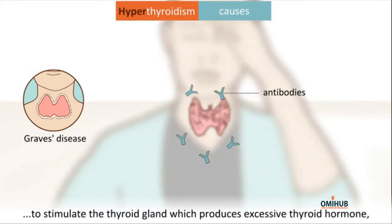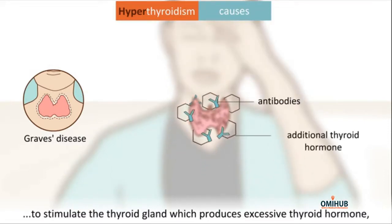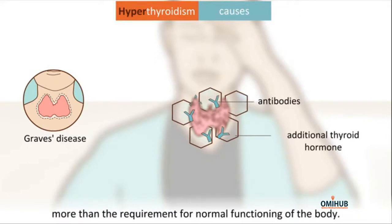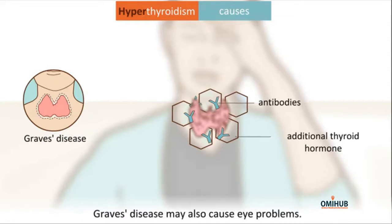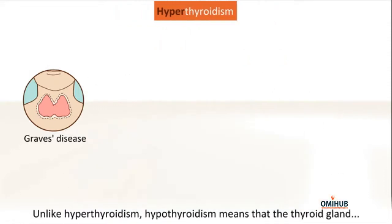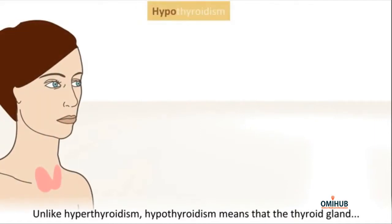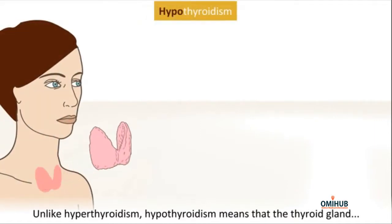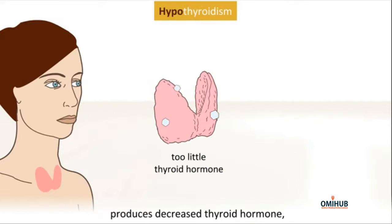The most common cause of hyperthyroidism is Graves' disease. It is an autoimmune disease where the body produces antibodies to stimulate the thyroid gland, causing it to produce excessive thyroid hormone — more than the body's normal requirement. Graves' disease may also cause eye problems.